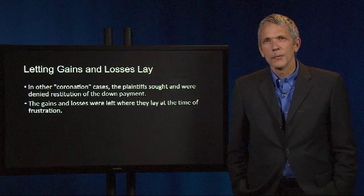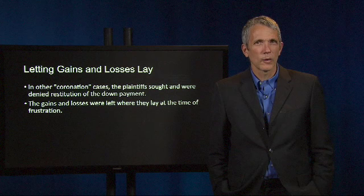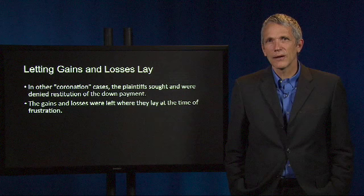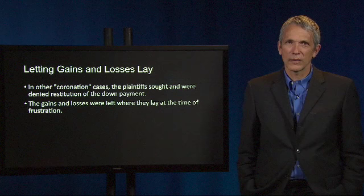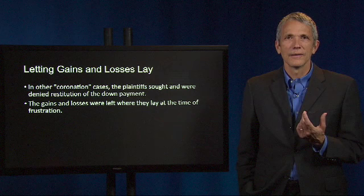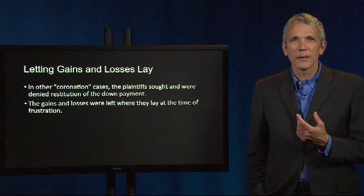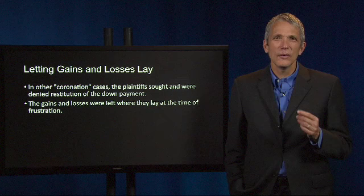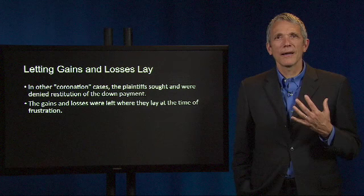Impracticability is about increases in sellers' costs of performing promises, whereas frustration is centrally about decreases in buyers' benefits. When unexpected events occur that either increase a seller's cost or decrease a buyer's benefit, courts sometimes discharge the party's duty to perform. Both doctrines are ways that courts make promises that seem unconditional on their face to be conditioned by default on the seller's performance not becoming impracticable, or the buyer's benefit from performance not being frustrated. By discharging performance when these bad news events occur, these doctrines spread the risk of the bad news between the two contractors.